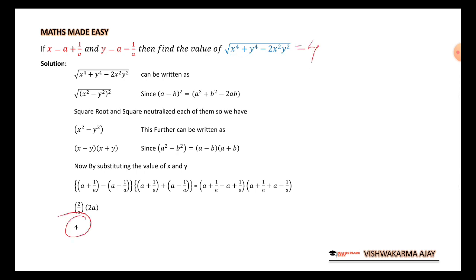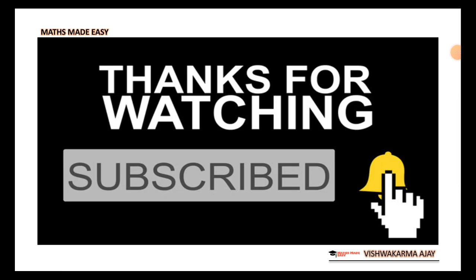So we can say that the value of under root x raised to 4 plus y raised to 4 minus 2x squared y squared is equal to 4. This is our answer. I hope this was easy for you. If you like this video, please subscribe to my YouTube channel, and I'll see you in the next one. Thank you very much.